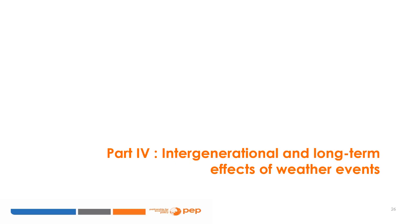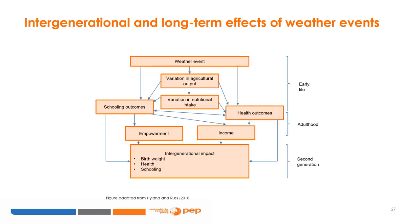Part 4 is about intergenerational and long-term effects of weather events. In the previous section, we analyzed the short-term effects of weather events on a number of outcomes. We showed that negative weather events occurring in childhood have direct effects on schooling and health outcomes by potentially reducing infrastructures and disrupting the health environment. Weather events can also have indirect effects on education and health by modifying household income and distorting school opportunity costs. The variation in agricultural output can make households adjust members' nutritional intake — when children are not sufficiently fed, they are less healthy and perform worse in school.